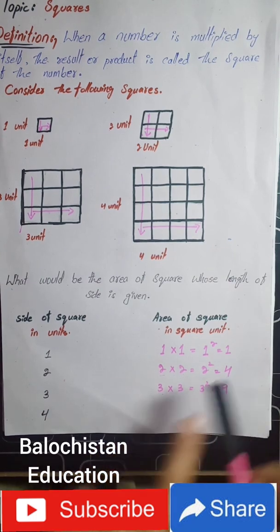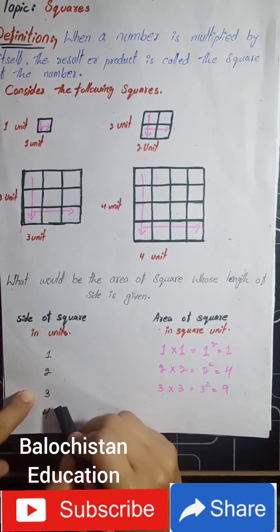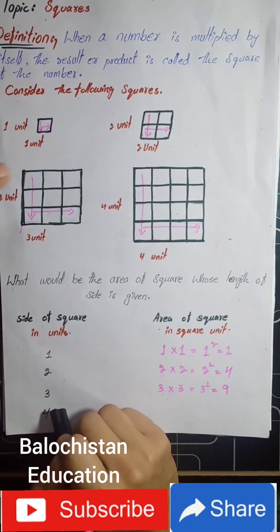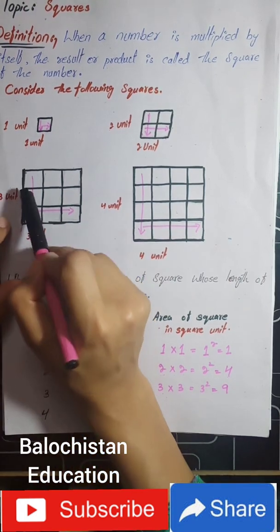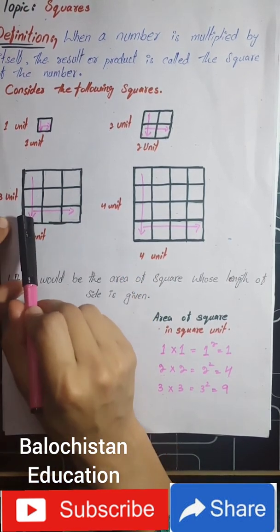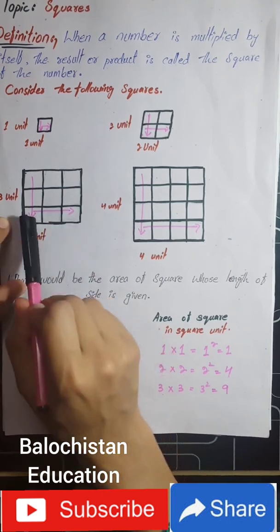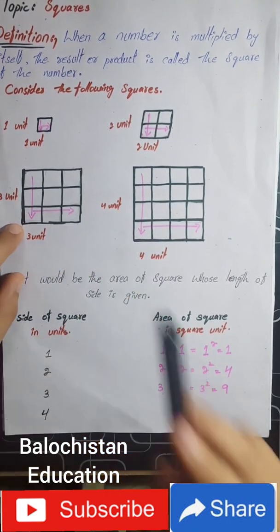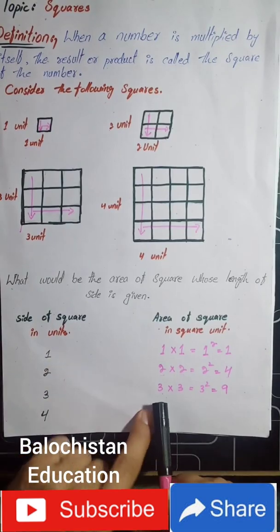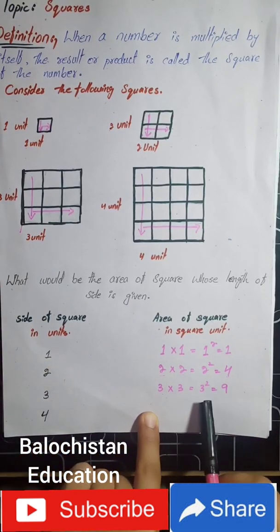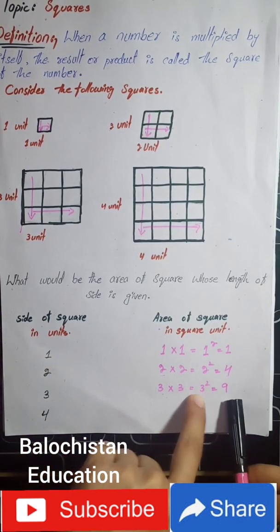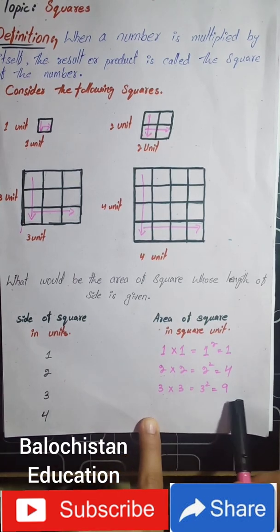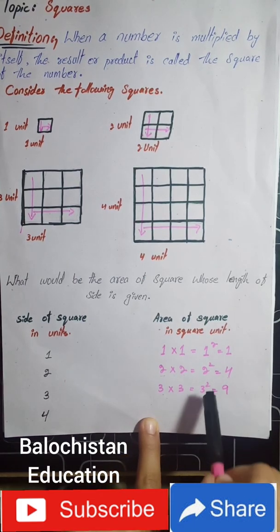For the third example, the side of the square is three units. This side has three units and the other side also has three units. When we multiply three by three, we get nine. So the square of three equals nine.